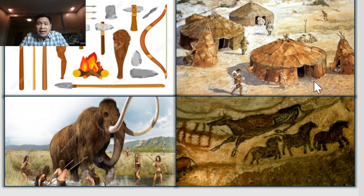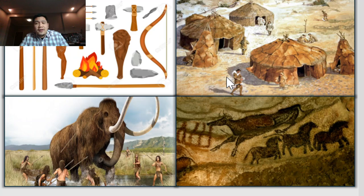For example, in area A where there is a lot of food, they would stay there for a month or two or three. Once the resources are gone, they have to find a new area — area B — where there is again a source of food and water. That is why the materials used for their huts were just lightweight materials, easy to build and easy to take down.